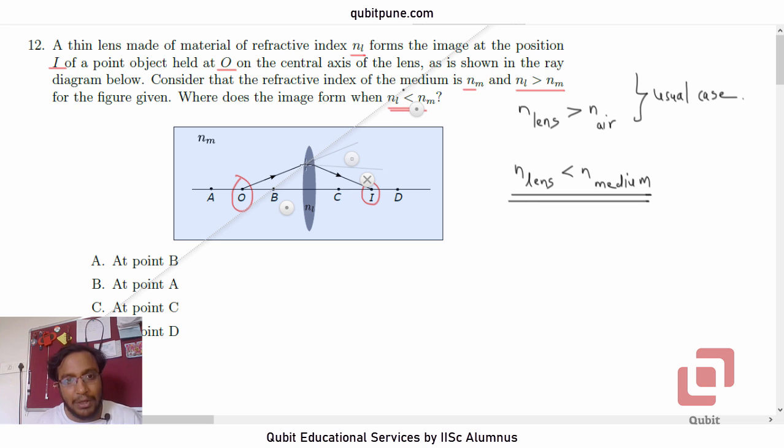Which means if you now draw a ray of light which has refracted, we have to trace it backwards